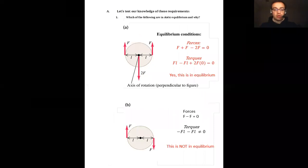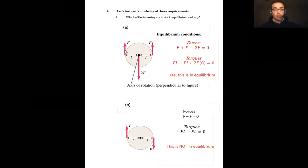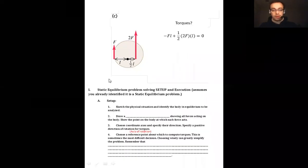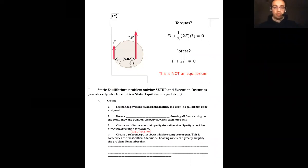To summarize: in the second example, the wheel will begin spinning but will not translate. In the third example, it will translate but not spin. And in the first — the actual equilibrium — the wheel will neither spin nor translate. So we've seen what an equilibrium is and what it isn't.